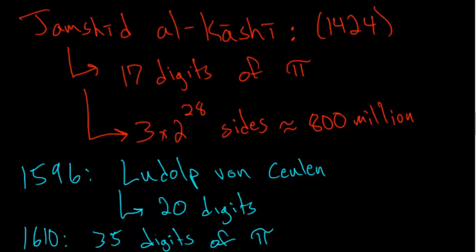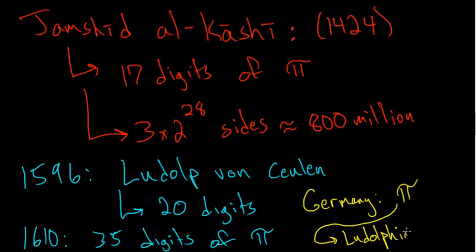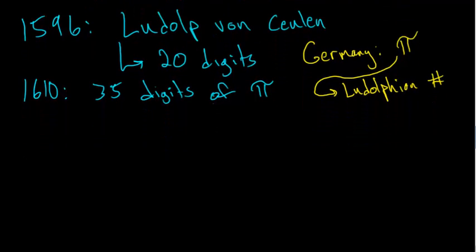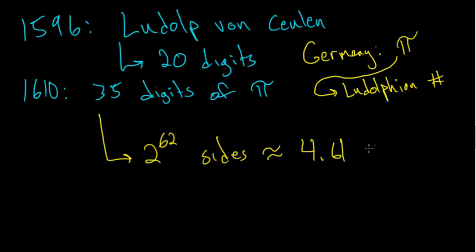Because Ludolf spent so much of his life calculating these digits, in Germany up until the 1900s, pi was referred to as the Ludolphian number. He even had these digits of pi inscribed on his tombstone. To find these 35 digits, Ludolf had to use a regular polygon with 2 to the 62nd power sides. This number is about 4.61 times 10 to the 18th power.